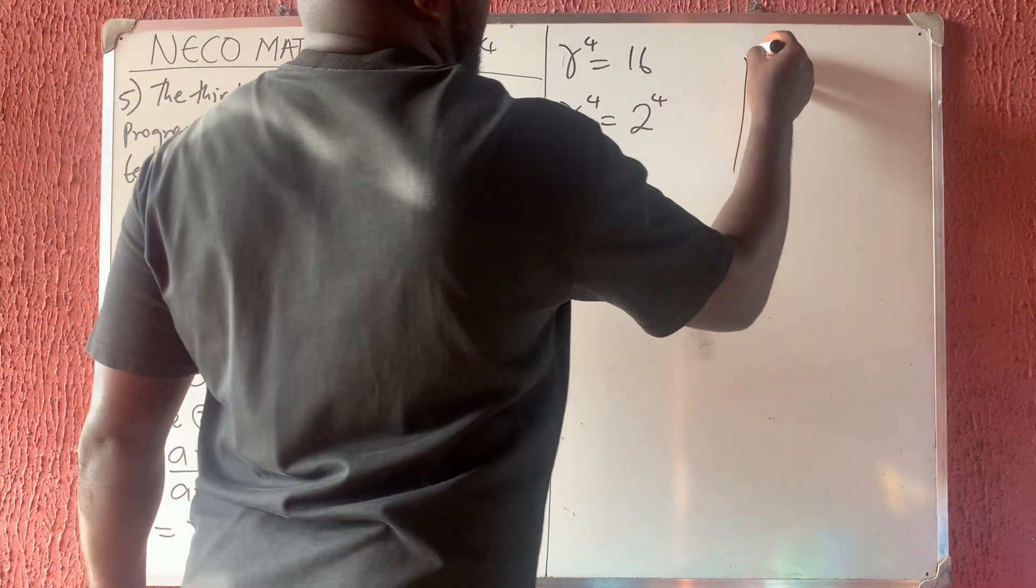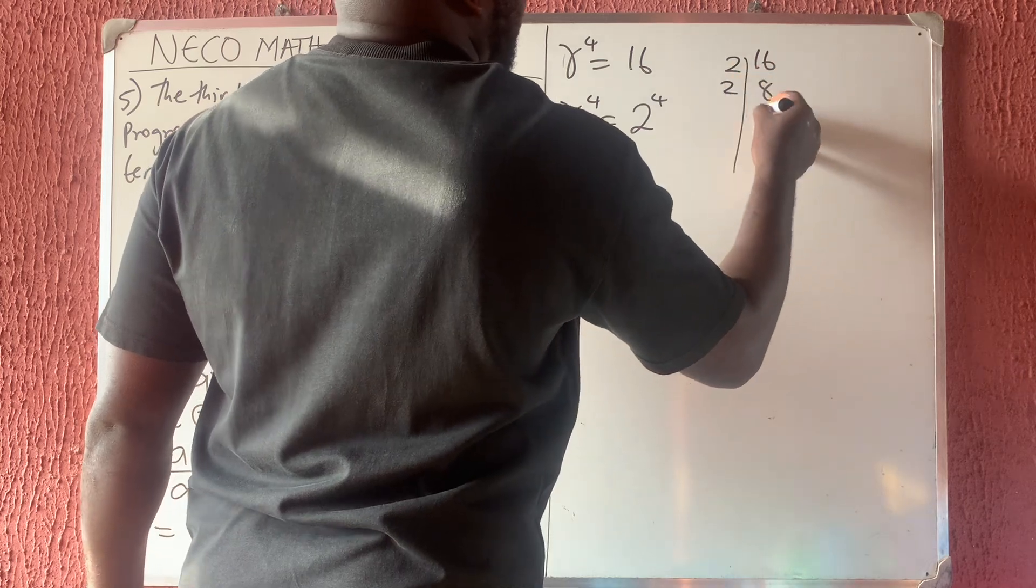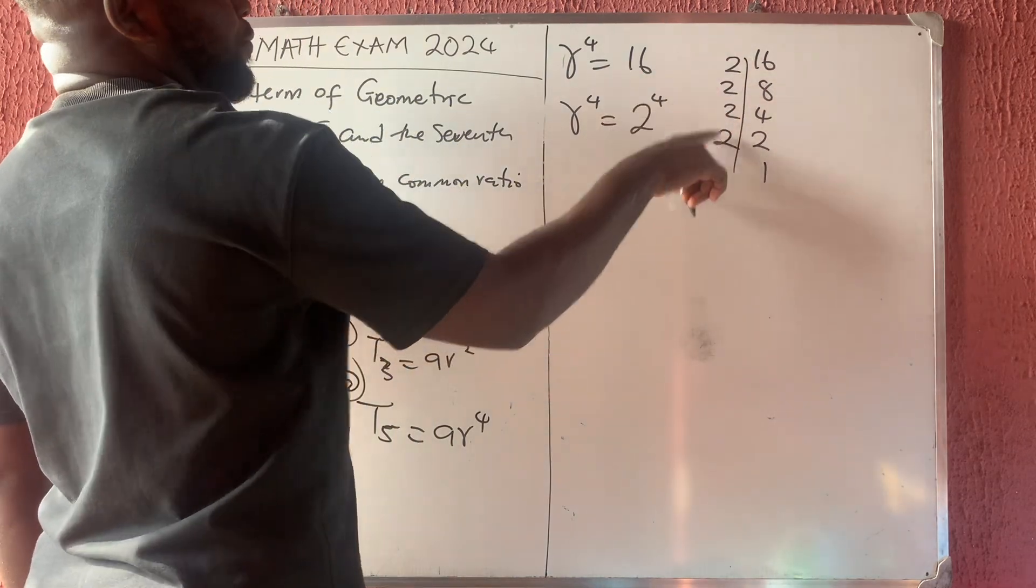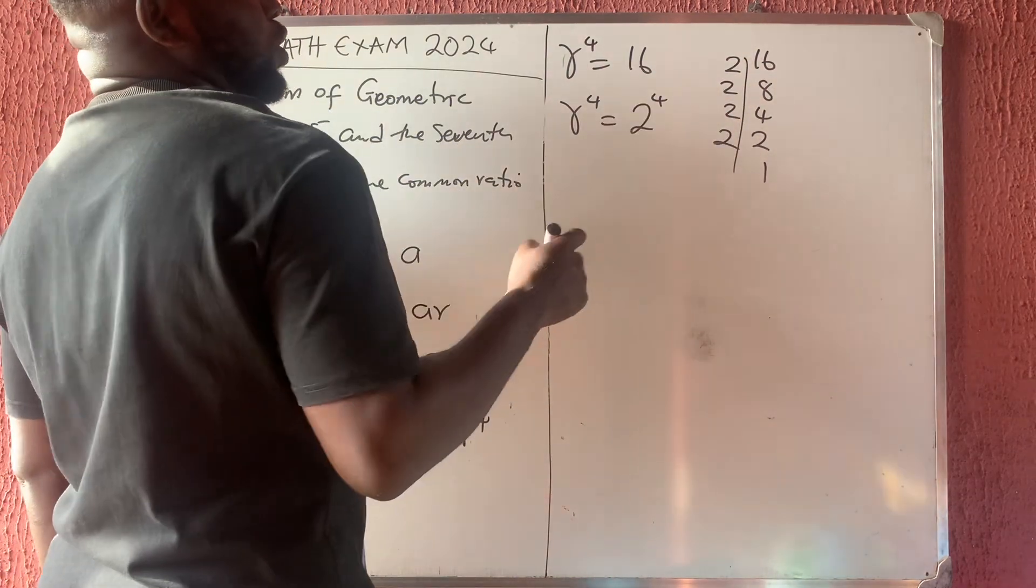Factor by LCM. 16, 2 divides 8, 2 divides 4, 2 divides 2, 2 divides 1. I am dividing with 2 and they are four in number. So that's how I got 2 raised to the power of 4.